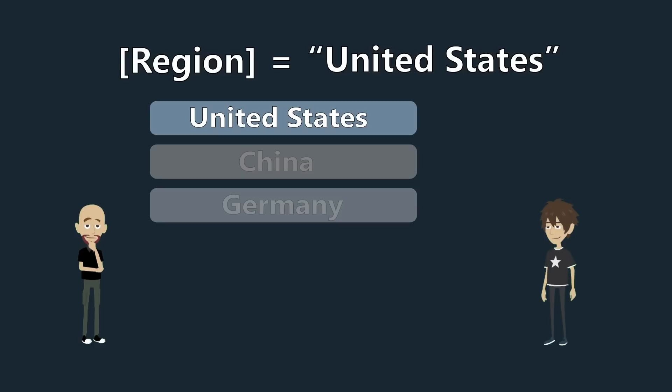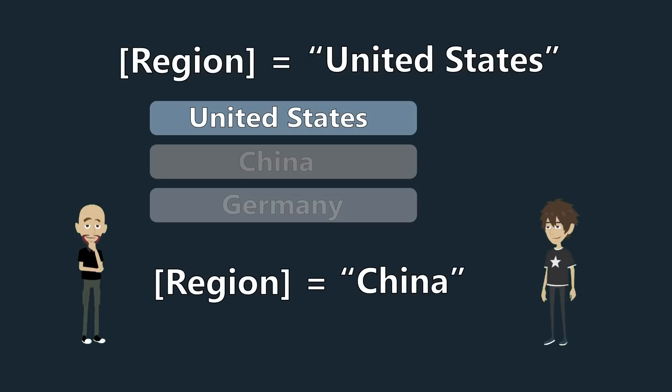I can create other roles. Say if I want to create another role that has a rule defined as region equals China, and I add John Doe to that as well — he's going to see United States and China. It will combine all the roles that John Doe is a member of within the data set.